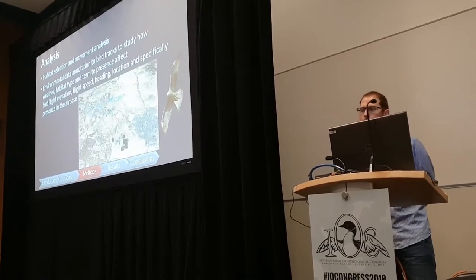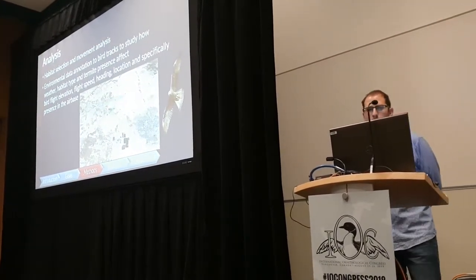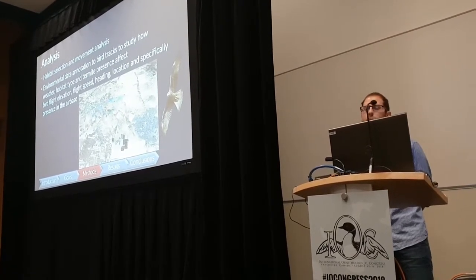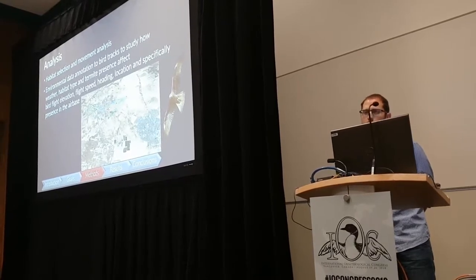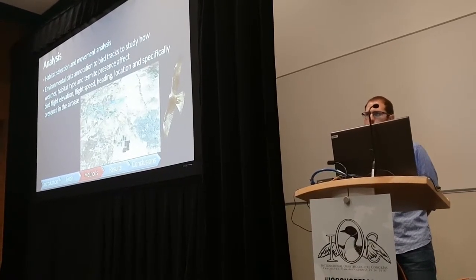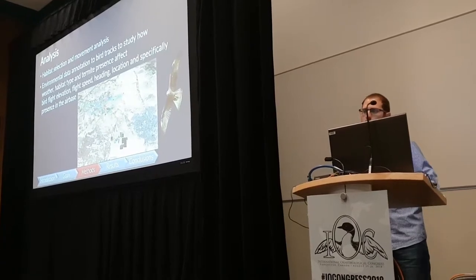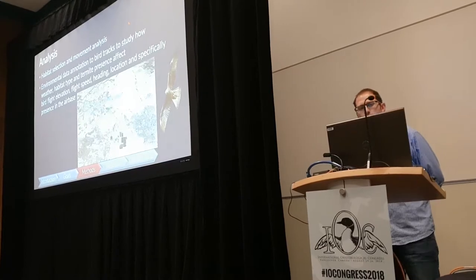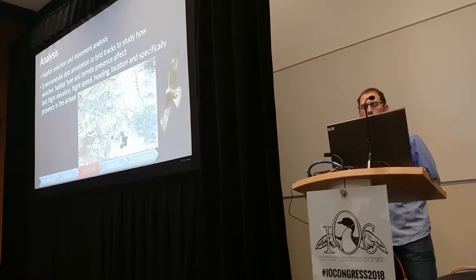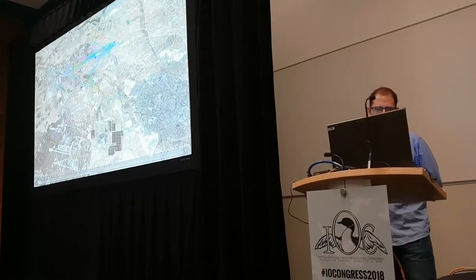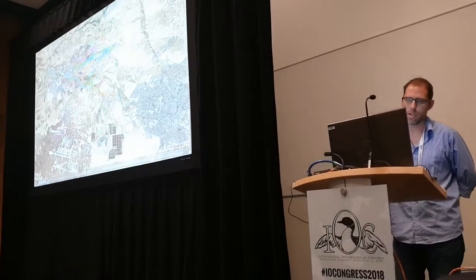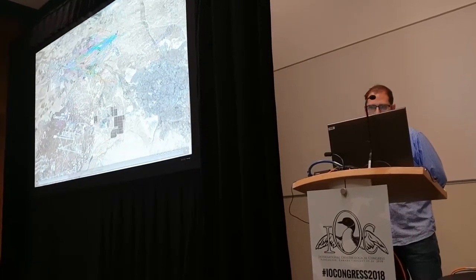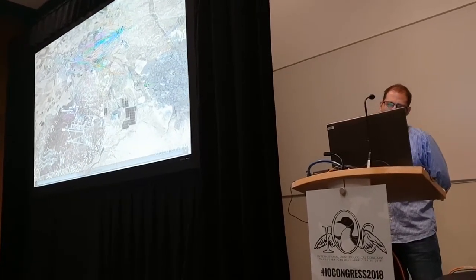Our analysis was focused on habitat selection and movement analysis. We took environmental data annotation to study how weather, habitat type, thermic presence or non-presence affected different kinds of kite movement — such as flight speed, elevation, heading, location, and especially presence in the airbase itself. This visualization shows how it looks: the airbase is here, and different colors represent different tagged individuals.